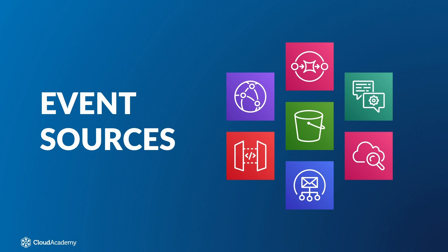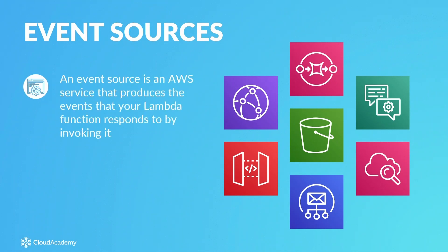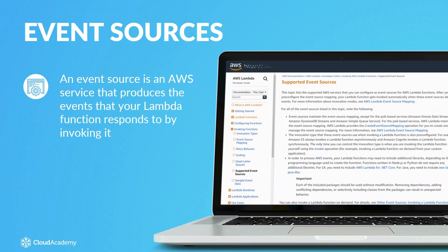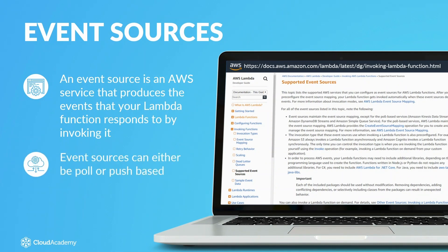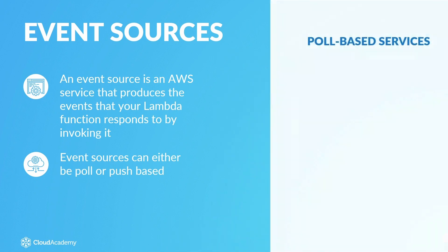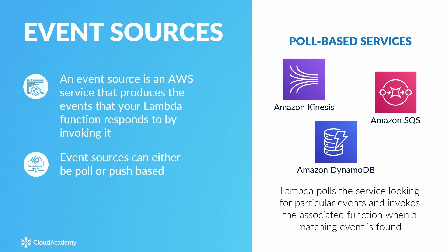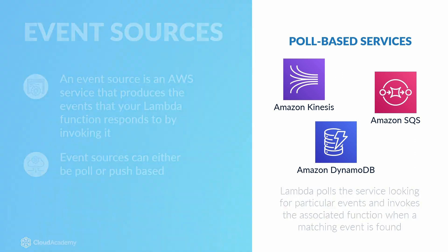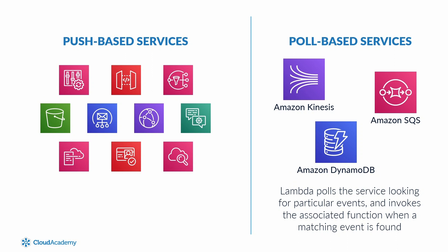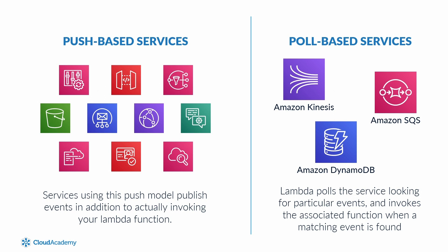An event source is an AWS service that produces the events that your Lambda function responds to by invoking it. Event sources can either be poll or push-based. The current poll-based event sources are Amazon Kinesis, Amazon SQS, and DynamoDB. When using these services, Lambda actually polls the service looking for particular events — for example, Lambda will poll the message queue for SQS, and then synchronously invoke the associated function when a matching event is found. Push-based event sources cover all remaining supported event sources; these services publish events and also invoke your Lambda function directly, rather than Lambda polling them.